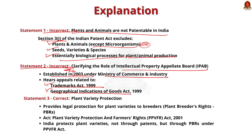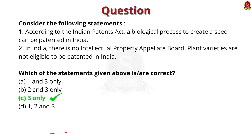Statement 3 is correct. Plant variety protection provides legal protection of a plant variety to a breeder in the form of plant breeders' rights. In India, the Plant Variety Protection and Farmers' Rights Act 2001 is a unique system that aims to provide for the establishment of an effective system for the protection of plant varieties and the rights of plant breeders and farmers. However, there are no laws in India that allow patenting plants. Hence statement 3 is correct, and the correct answer for this question is option C, 3 only. With this, let's move on to our daily newspaper analysis.